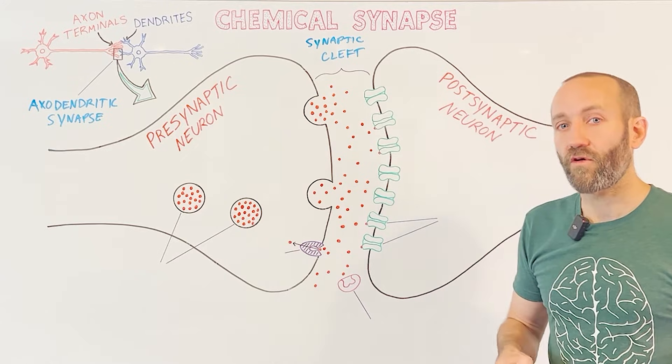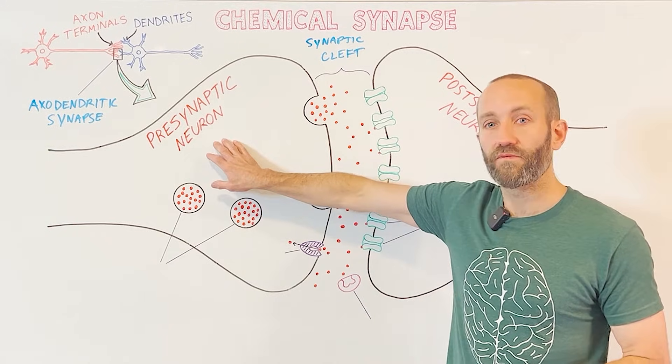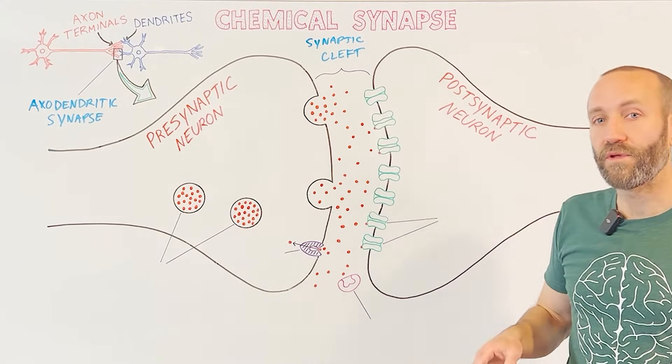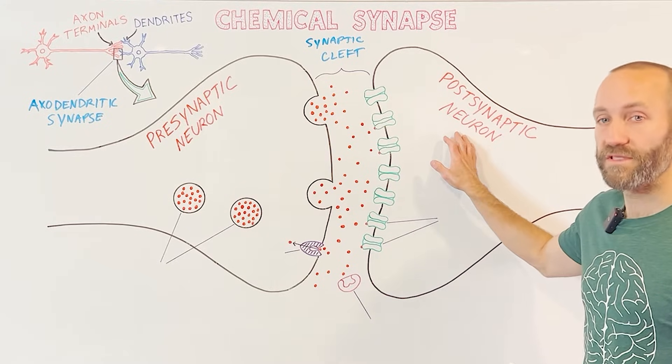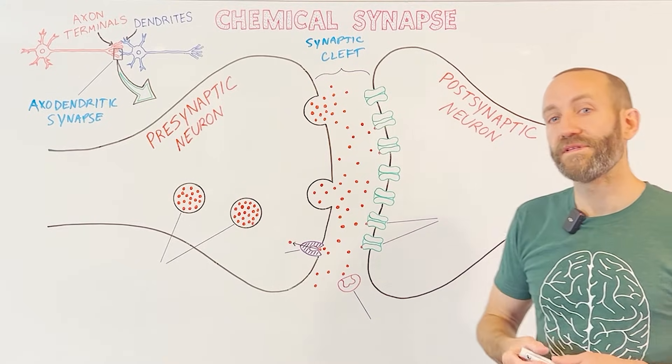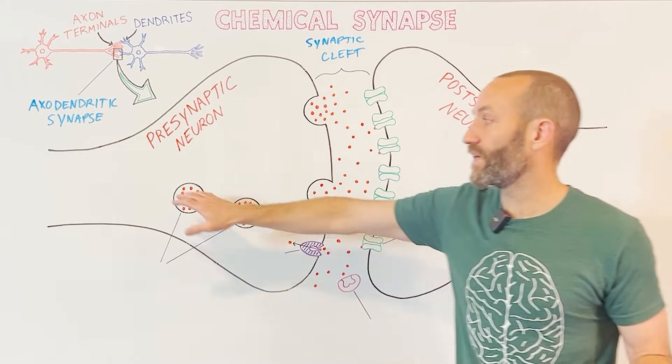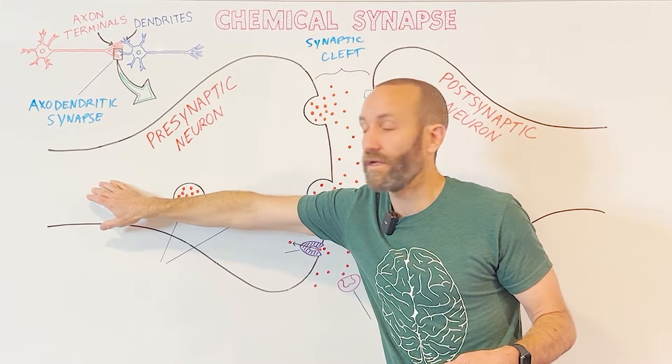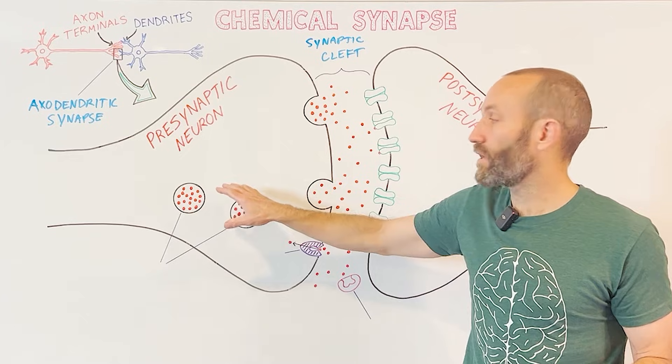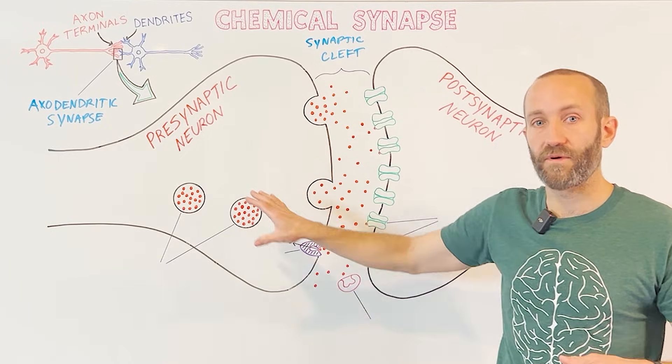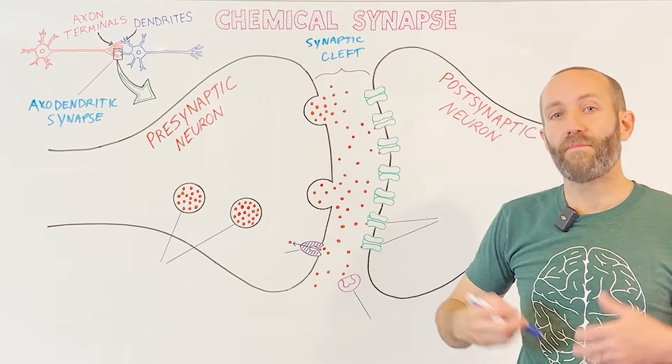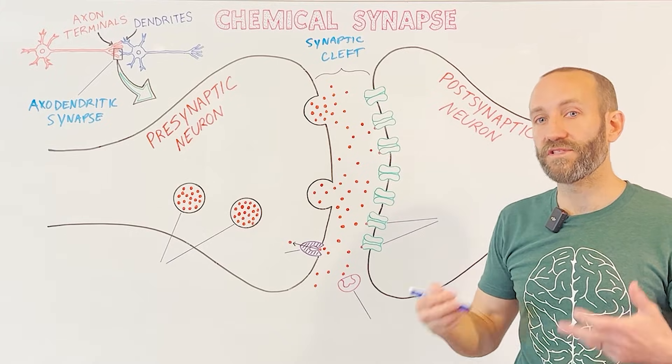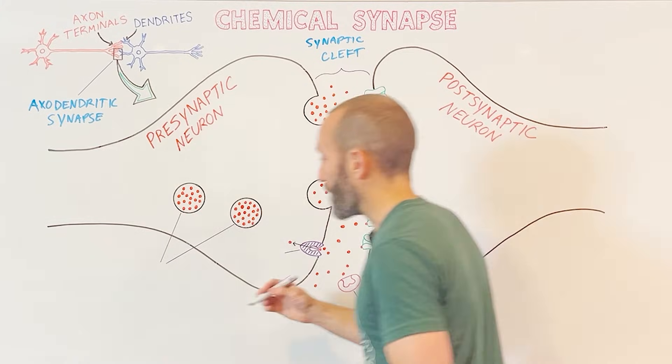The neuron that will be sending a signal across the synaptic cleft is called the presynaptic neuron. The neuron that will be receiving the signal is called the postsynaptic neuron. So what happens is that we have this electrical signal, this action potential, that's traveling down the axon of the presynaptic neuron. And when it reaches the axon terminal, it causes changes in the electrical properties of the interior of the cell. And that prompts a series of events that leads to the mobilization of structures called synaptic vesicles.